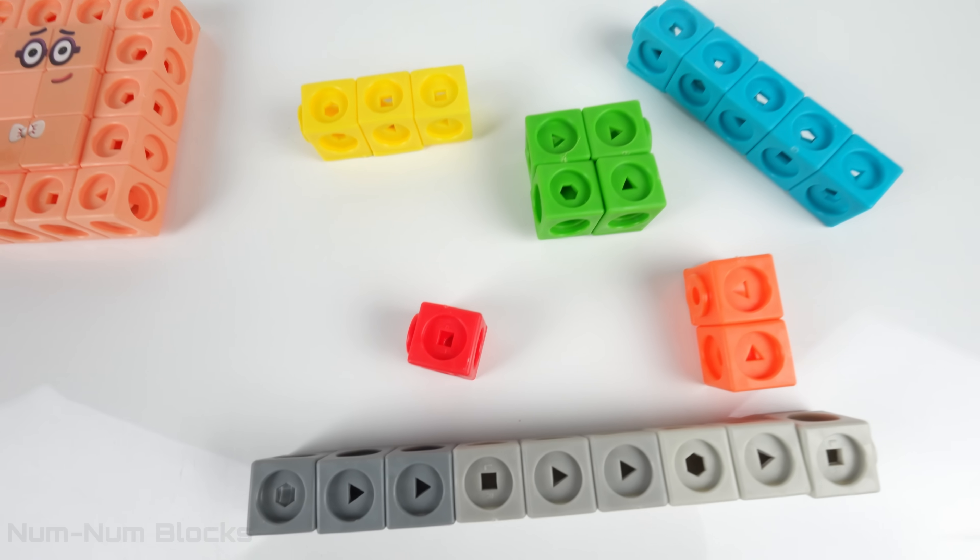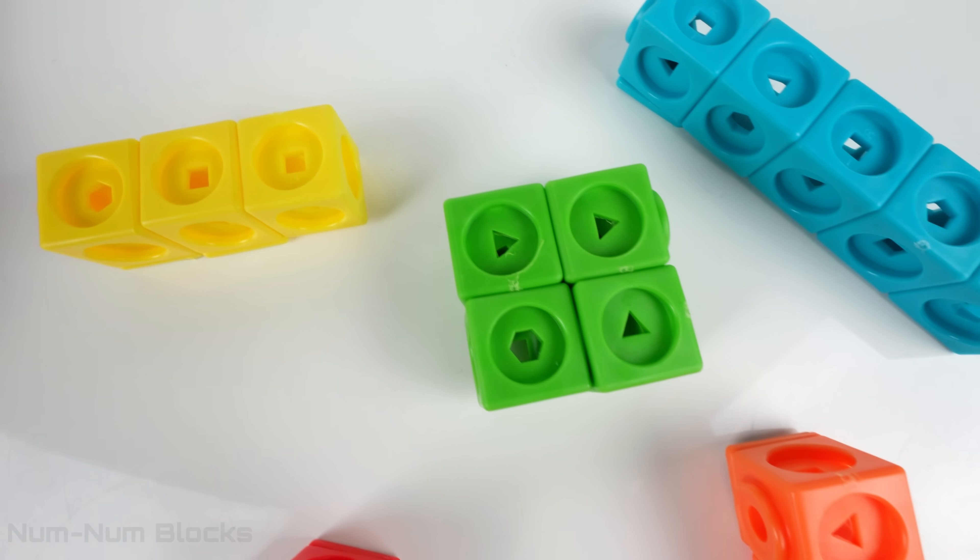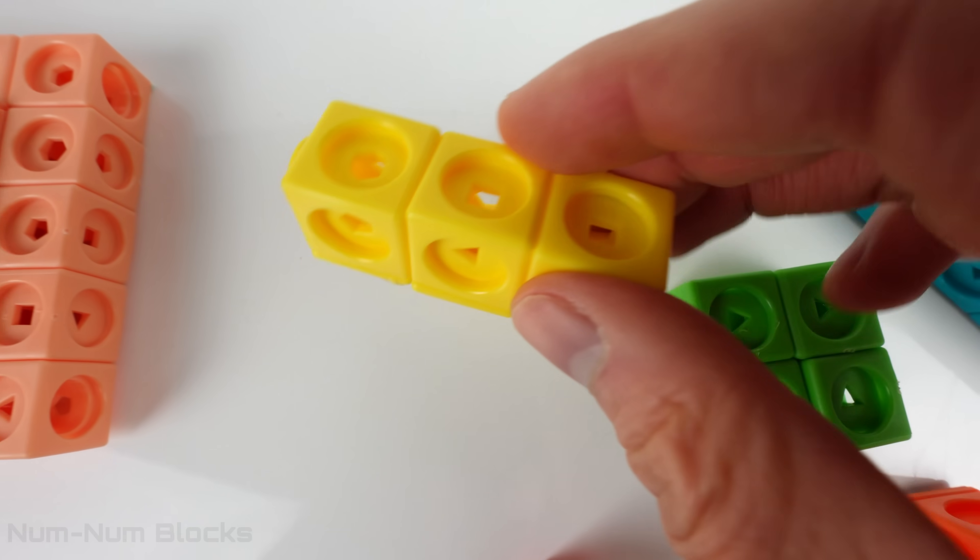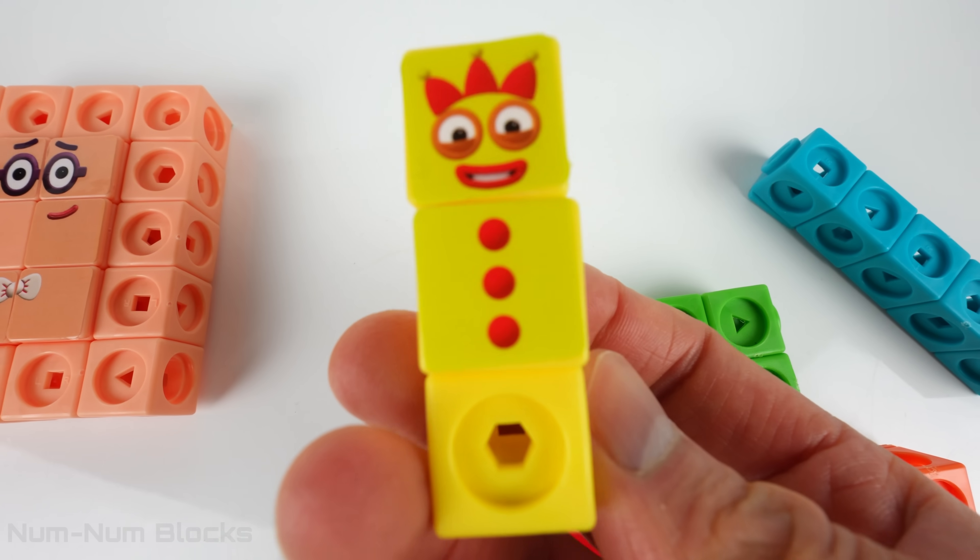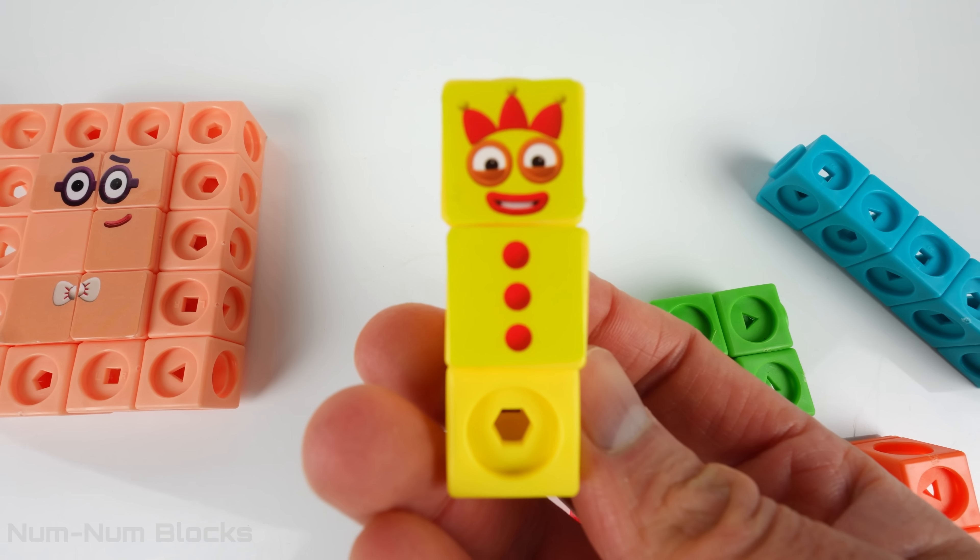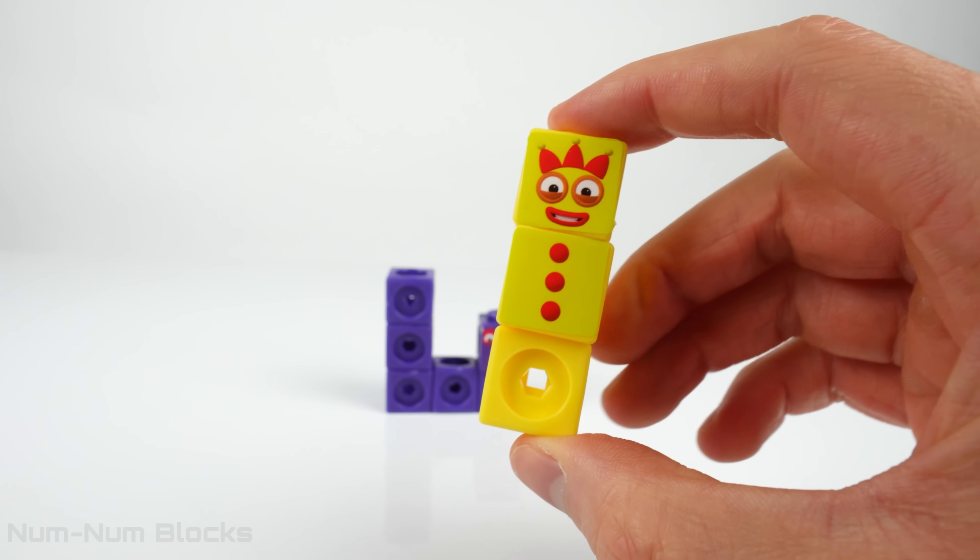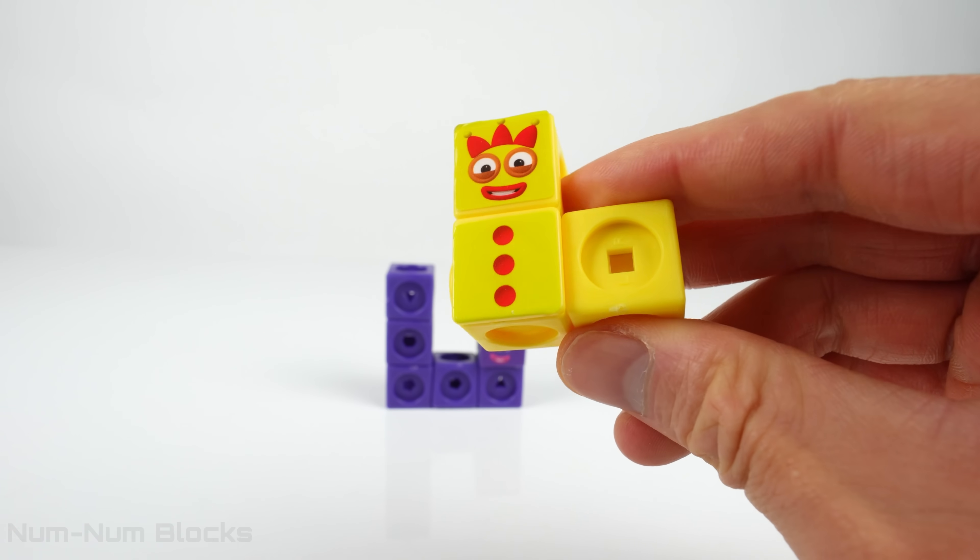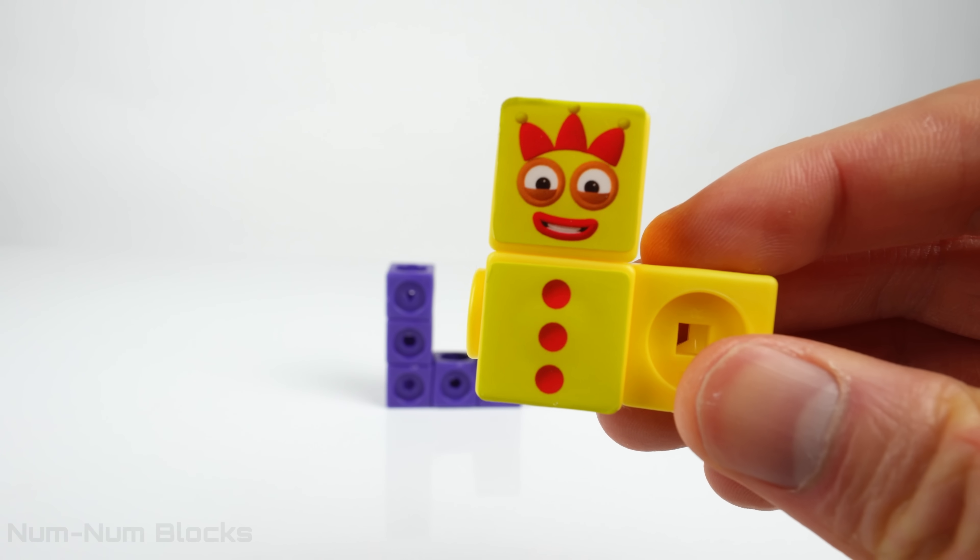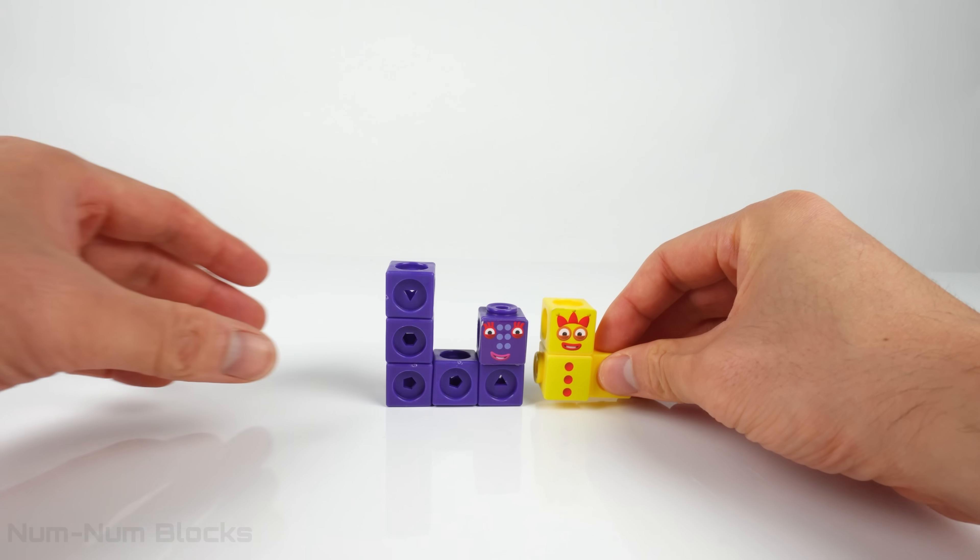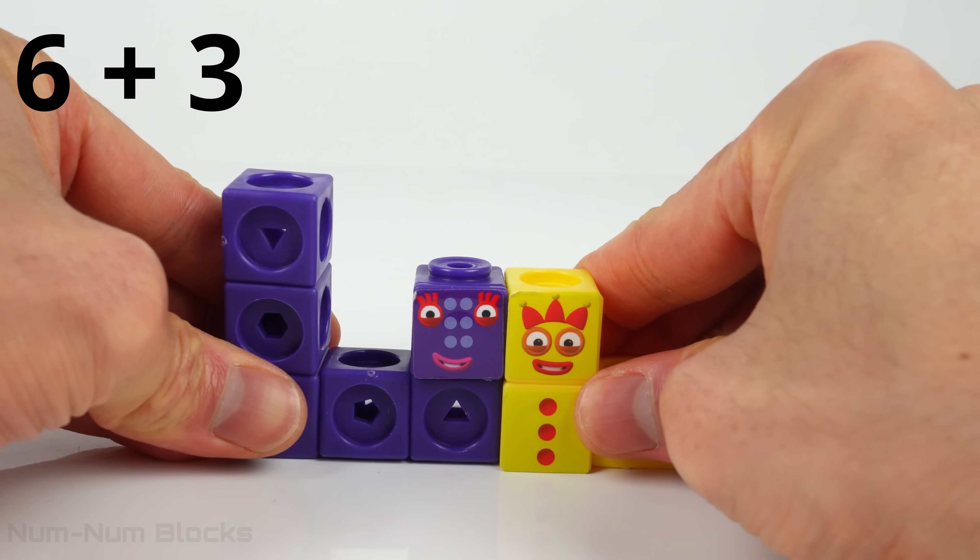We have more number blocks to add to 6. Let's pick the yellow number block. Number block 3. Let's make 3 look different. Now let's put 6 and 3 together. 6 plus 3 equals 9.